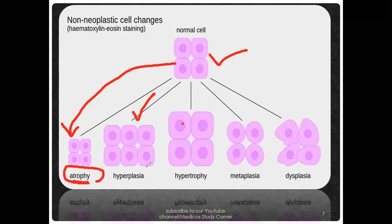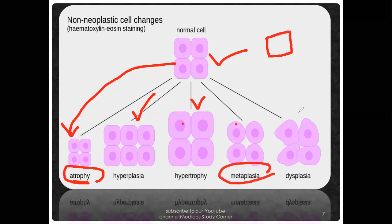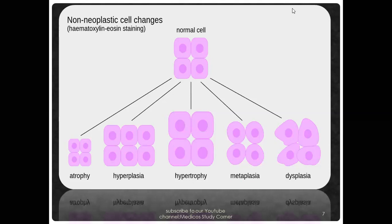Hypertrophy is an increase in the size of cells. Metaplasia means a different type of cell or epithelium changes its shape — this is called metaplasia. Dysplasia has a shape change where the epithelium is altered or destroyed — this is called dysplasia. These terms are important from an MCQ perspective.